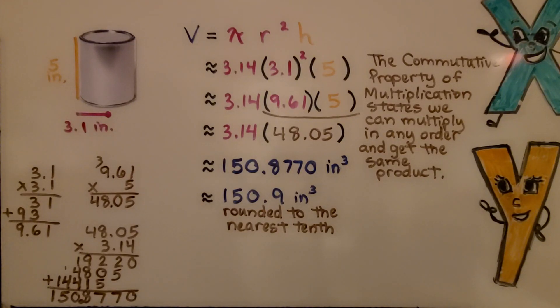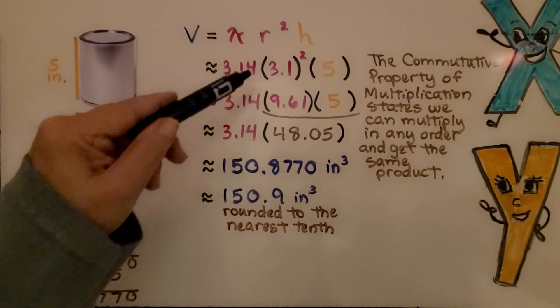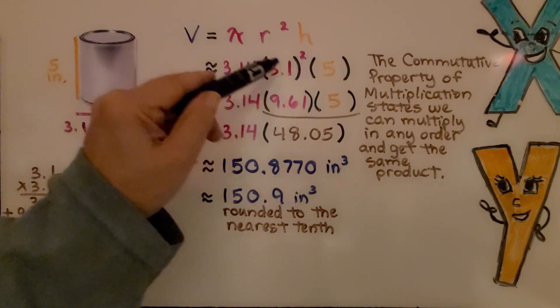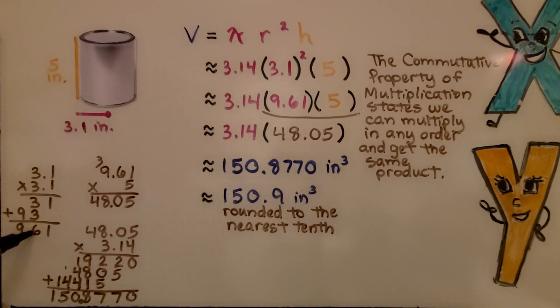Here we have a can. Again, we can see the height is 5 inches and the radius is 3.1 inches. We substitute the values into the formula. We have 3.1 squared. Remember, we are going to do these exponents before we do anything else, which is going to give us 9.61.